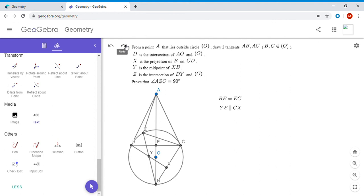So since YE is parallel to CX, we have angle BYE is 90 degrees. So we're getting a number of pretty valuable things from constructing that point E.